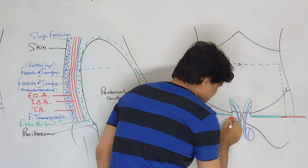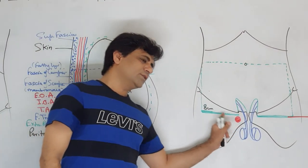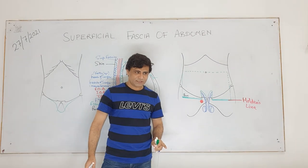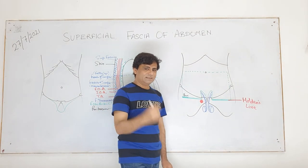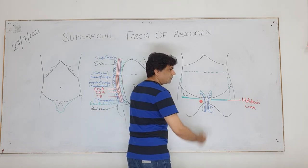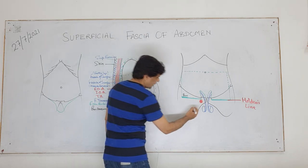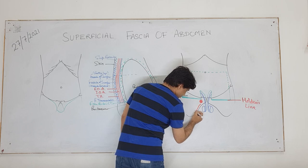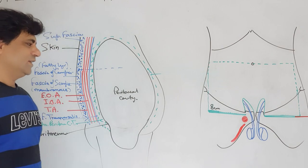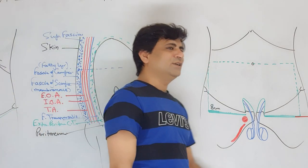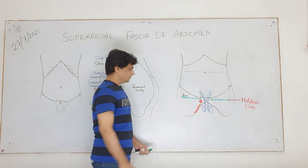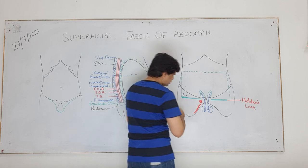Holden's line has significance here. There are muscles attached - remember the horse rider's muscle, adductor longus, which you find in the groin when you abduct the thighs. From the lower margin of the ischiopubic ramus, the muscle arising is gracilis. So this fascia of Camper is attached to the body of pubis.